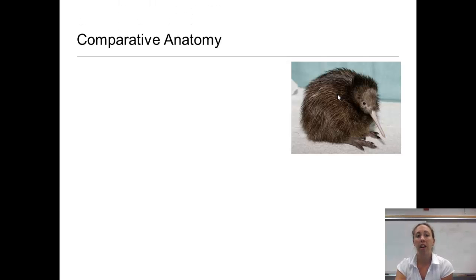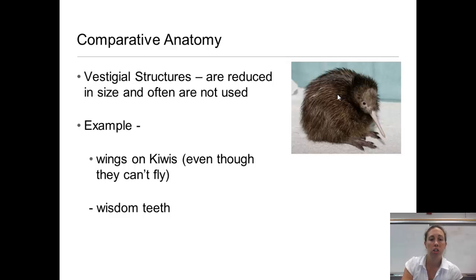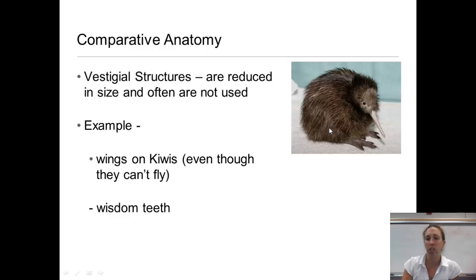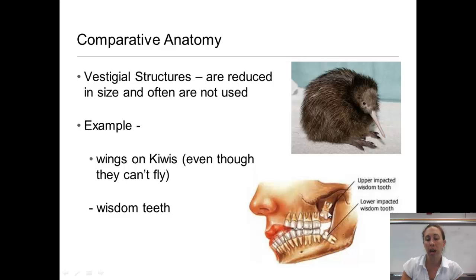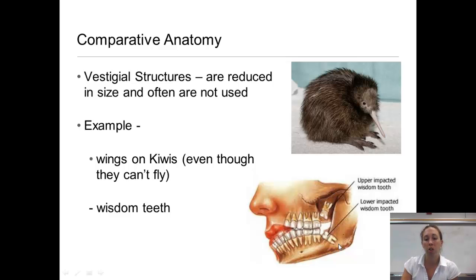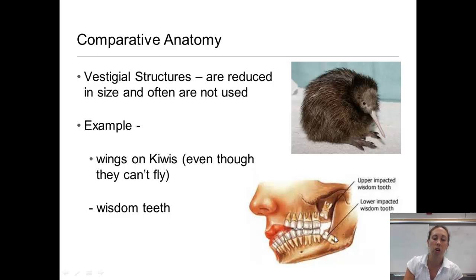Vestigial structures are reduced in size and are often not used. An example is wings on a kiwi — they have wings but can't actually fly. Another example is human wisdom teeth, which we no longer have a purpose for and most people have to get removed. These are structures left over from before that we no longer use.